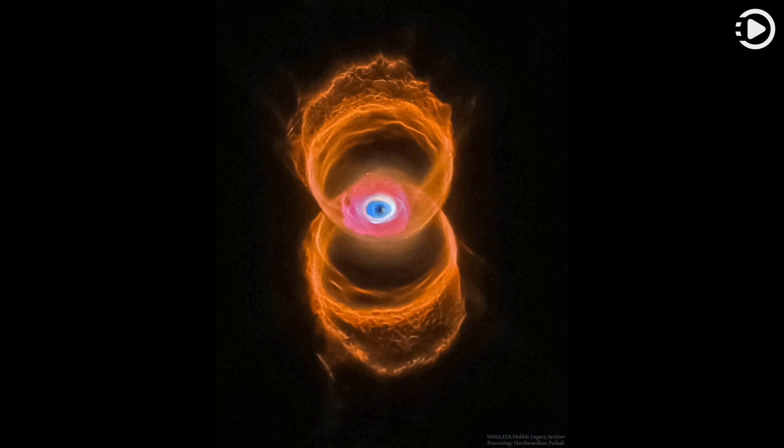Pictured, delicate rings of colorful glowing gas, nitrogen red, hydrogen green, and oxygen blue, outline the tenuous walls of the hourglass.